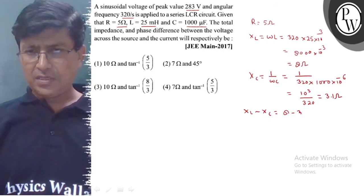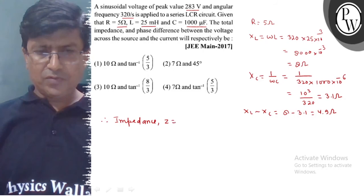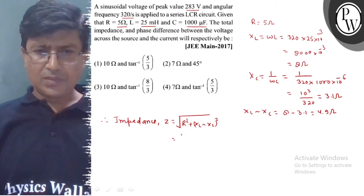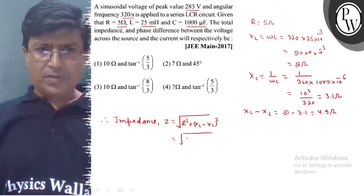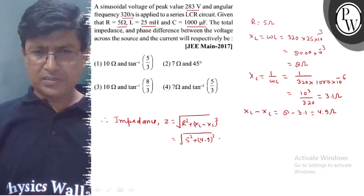So 8 minus 3.1 is equal to 4.9 ohm. Therefore, the circuit's total impedance will be equal to under root R square plus XL difference XC whole square, which equals under root 5 square plus 4.9 whole square, giving an approximate value of 7 ohm.